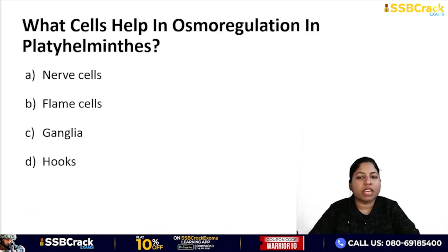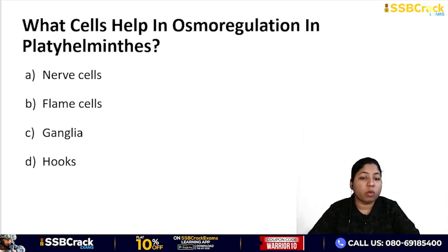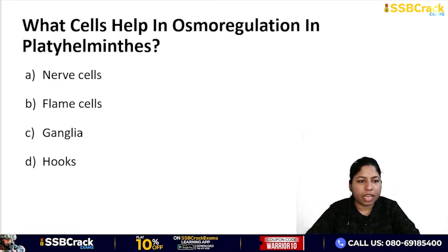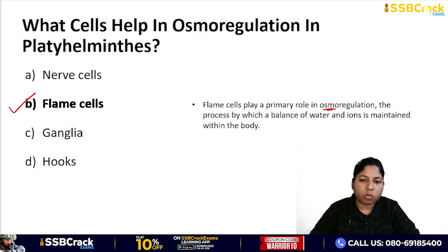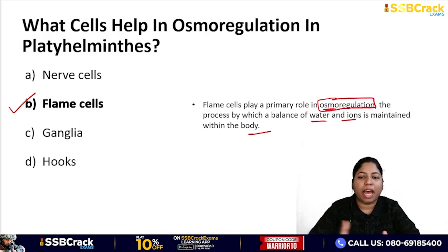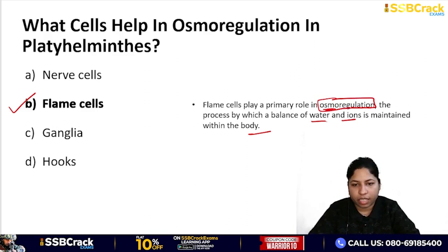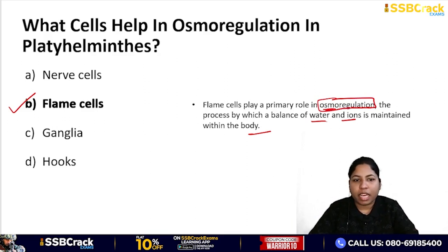Next question: what cells help in osmoregulation in Platyhelminthes? Options: nerve cells, flame cells, ganglia, or hooks. The correct answer is flame cells. Flame cells play a major role in osmoregulation by maintaining the balance of water and ions within the body. This is a characteristic feature of phylum Platyhelminthes.